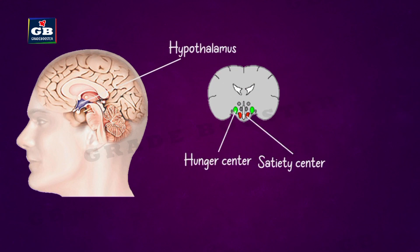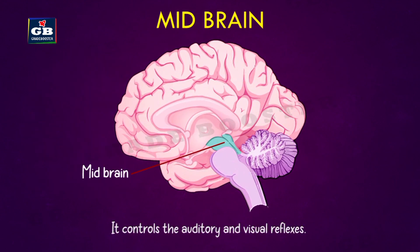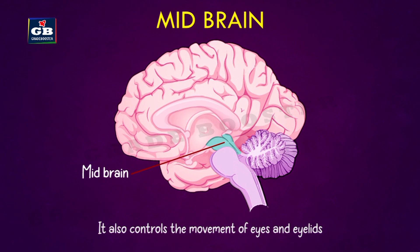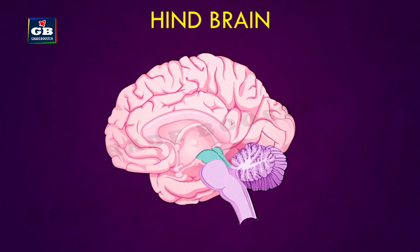The sensation of hunger and feeling full is also controlled by a separate area of the forebrain. The midbrain controls visual and auditory reflexes, and also has a center for controlling the movements of our eyes and eyelids.